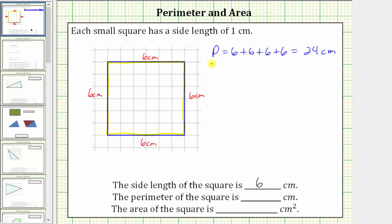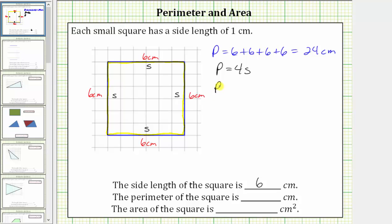There is also a formula we can use to determine the perimeter of a square. If we label the length of each side s, the perimeter is equal to s plus s plus s plus s, which equals 4s, giving the perimeter formula for a square: p equals 4s. In our case, the side length is 6 centimeters, so p equals 4 times 6 centimeters, which equals 24 centimeters.